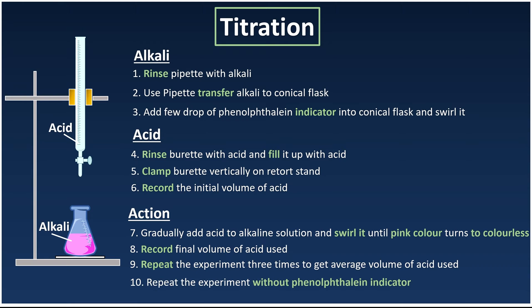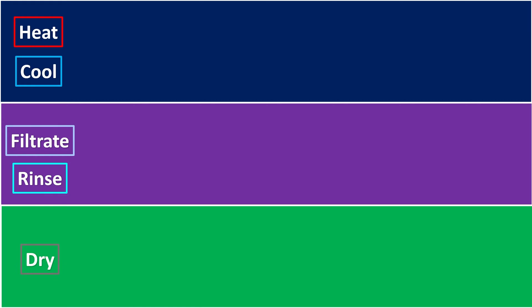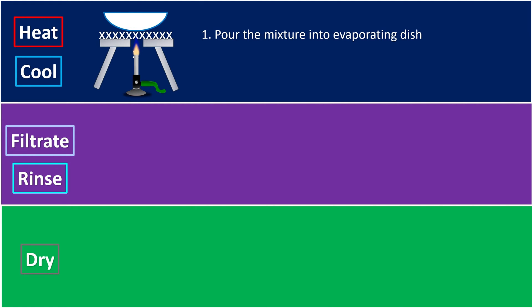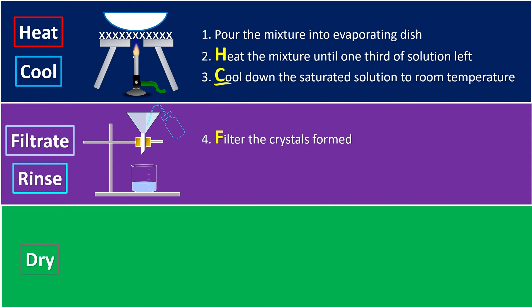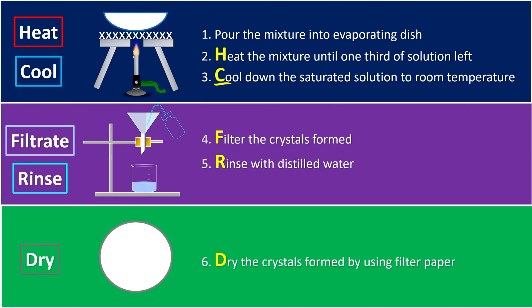For the final repeat, we do the experiment without any indicator. Once done, we follow up with the HCF steps: heat the mixture until only one third remains and it becomes saturated, then cool it to room temperature so crystals form. Filter the crystals and rinse with distilled water to remove impurities, then dry by squeezing the crystals against filter paper.